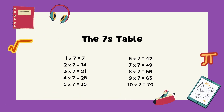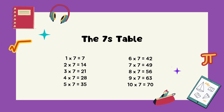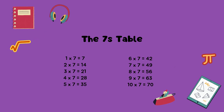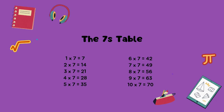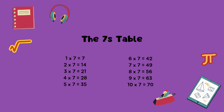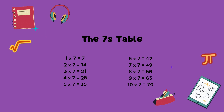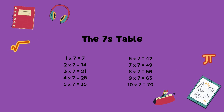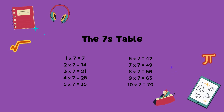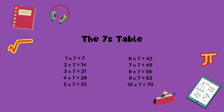The sevens table. One times seven equals seven. Two times seven equals fourteen. Three times seven equals twenty-one. Four times seven equals twenty-eight. Five times seven equals thirty-five. Six times seven equals forty-two.